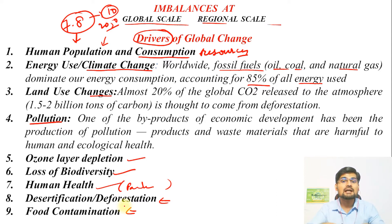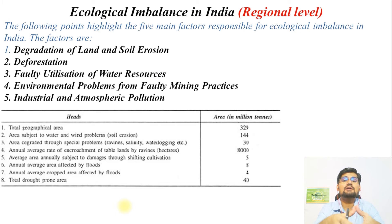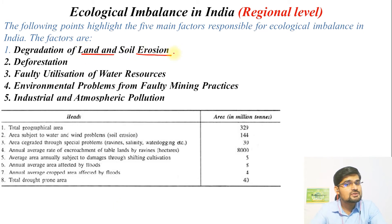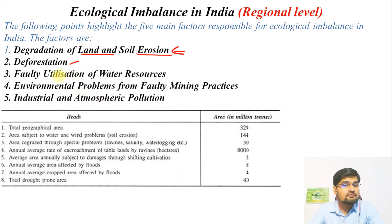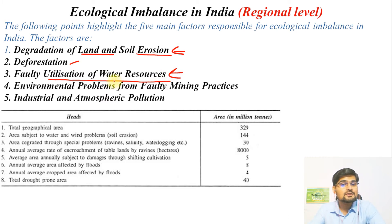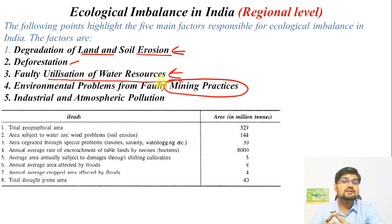At the regional or country level — India level — important ecological imbalance factors include degradation of land and soil erosion, common in plains regions; deforestation due to huge population concentration and increasing demand for agricultural land; and faulty utilization of water resources. A country so rich in rivers facing water shortage is an irony. Environmental problems from faulty mining practices are also significant, as open-cast mines create deforestation issues.